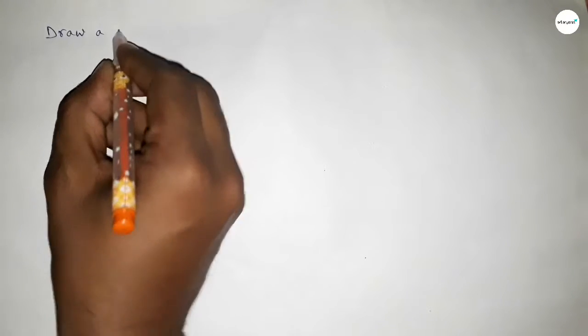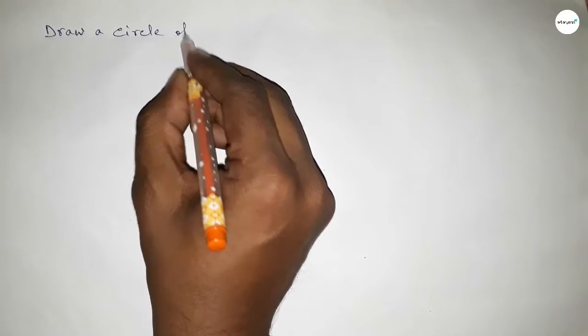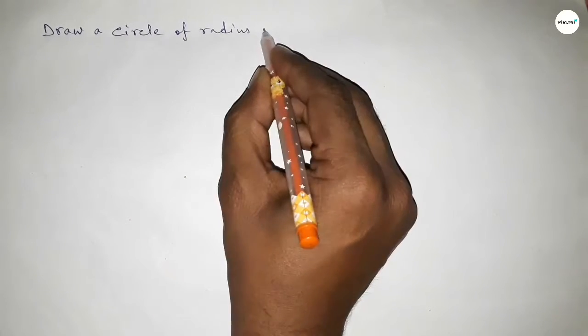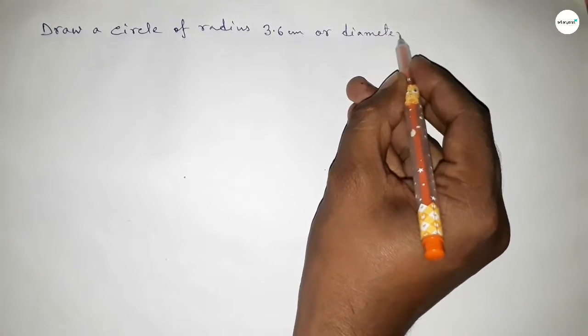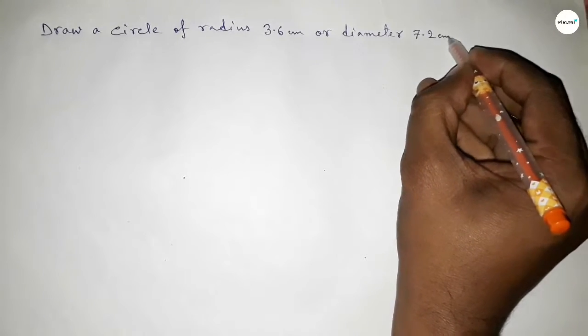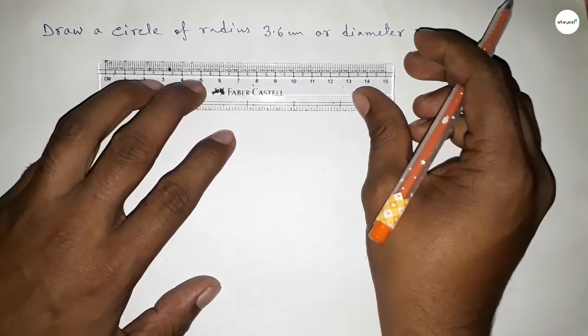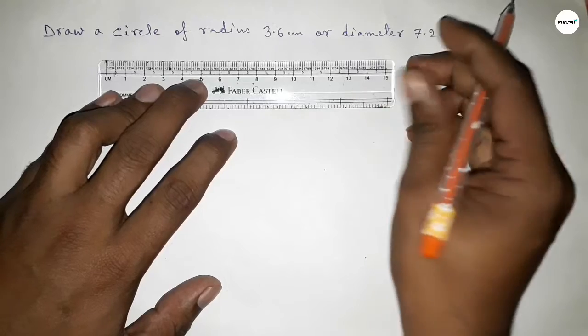Hi everyone, welcome to SI Share Classes. Today in this video we have to draw a circle of radius 3.6 centimeter or diameter 7.2 centimeter. So let's start the video. First of all, drawing here the radius 3.6 centimeter.